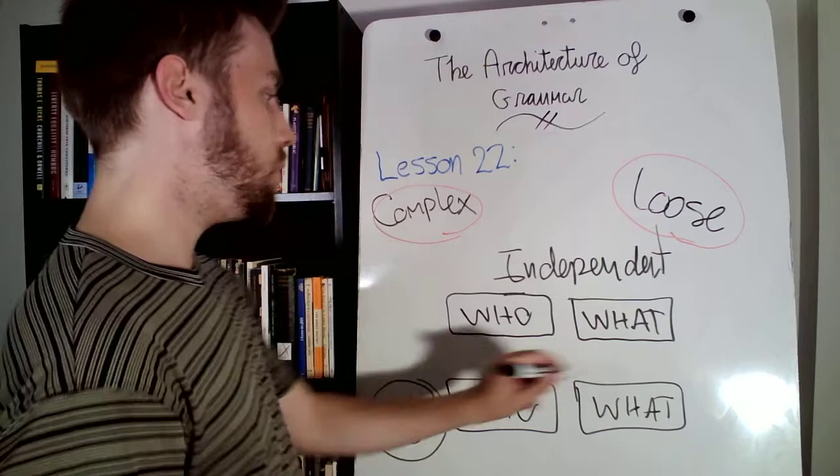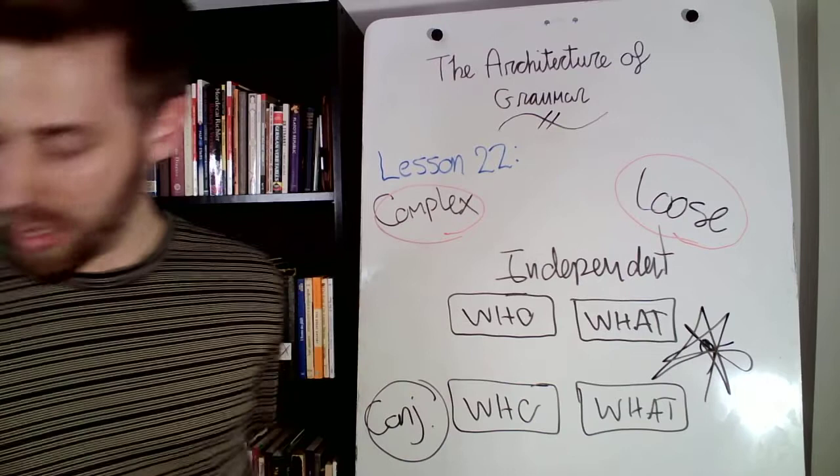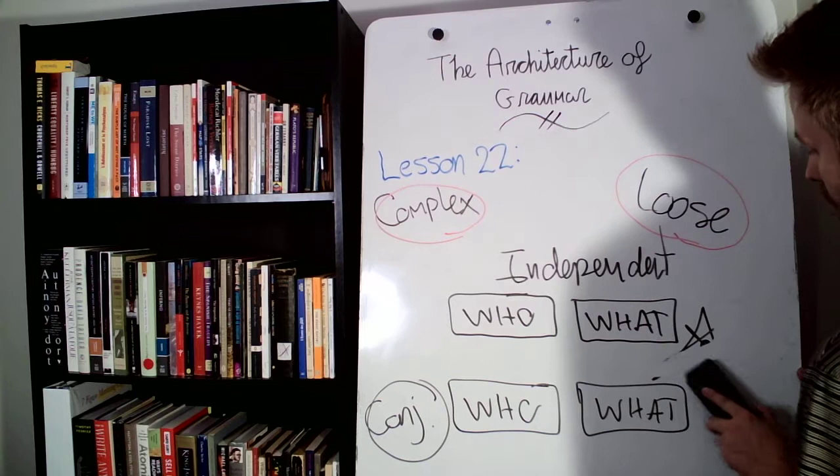So we have our who and our what, so that's independent. And then we'll have our who and our what, with a conjunction. Now here's the thing, because we have a loose sentence, we do not need a comma. No comma for loose sentences.